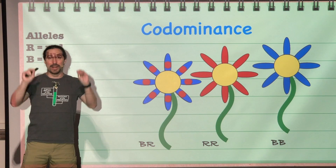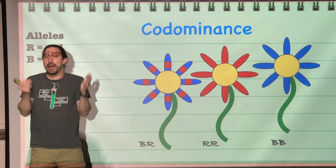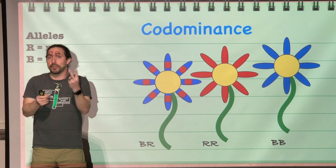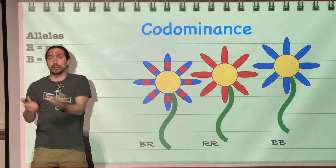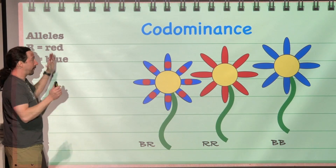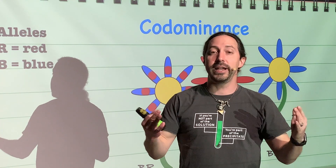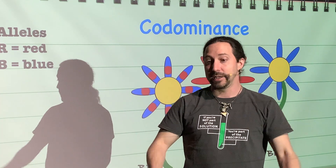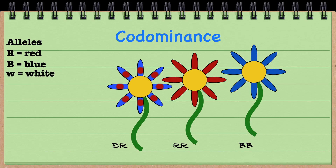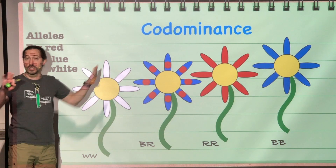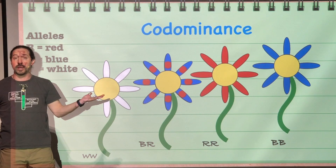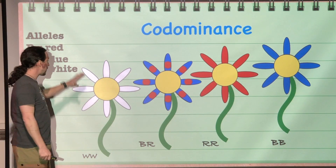But that's not all, because we don't just have to have only two different alleles — a gene can have many alleles. So we're going to add a white allele, and this white allele is going to be completely recessive to both the blue and the red alleles, going back to our previous example of complete dominance where the only way you had a white flower was if it was homozygous for white.